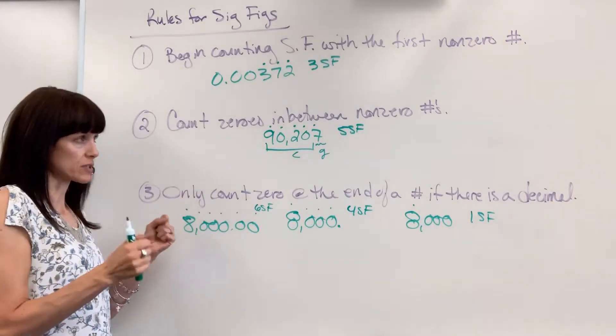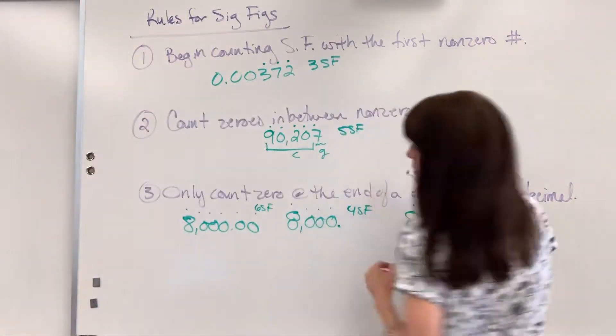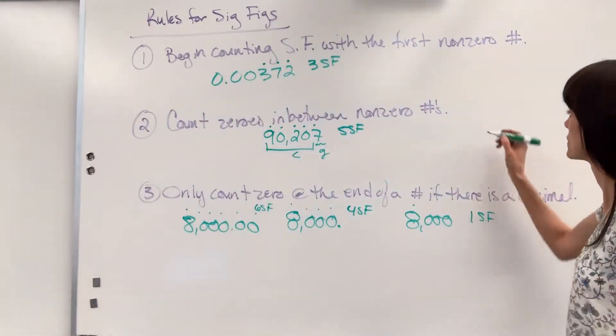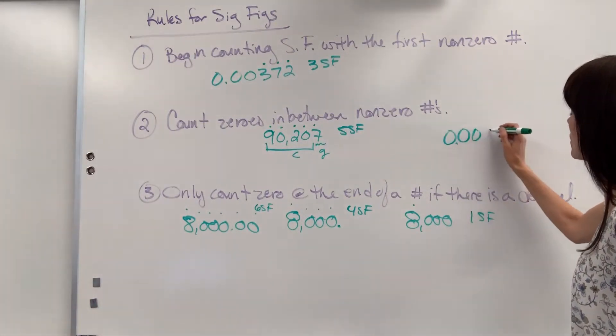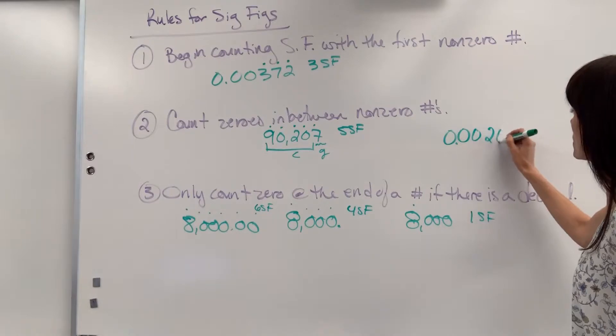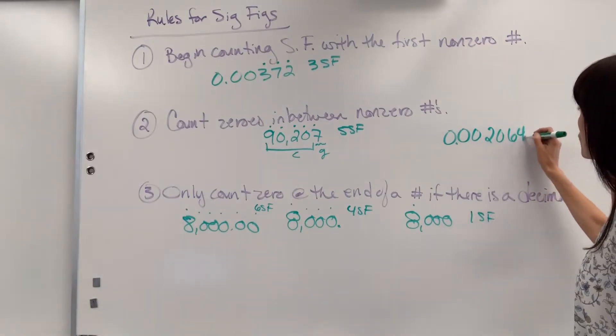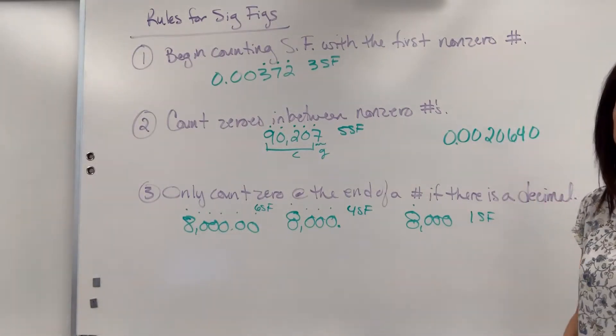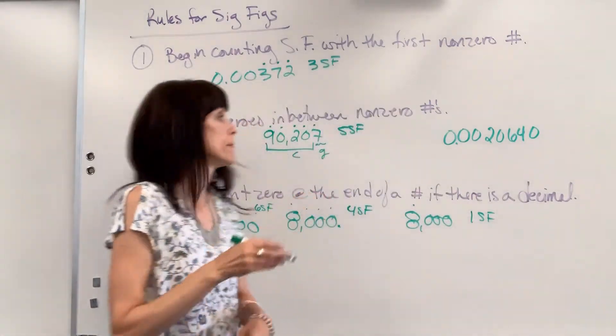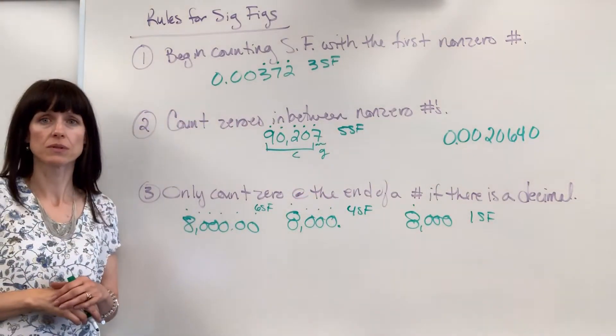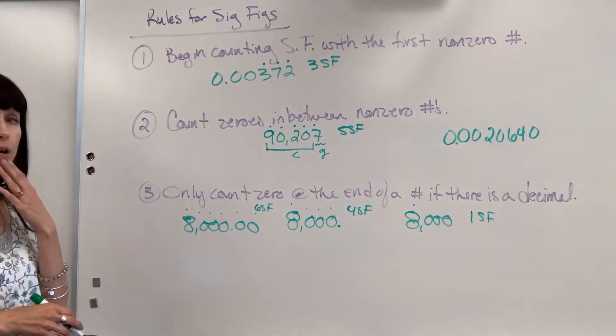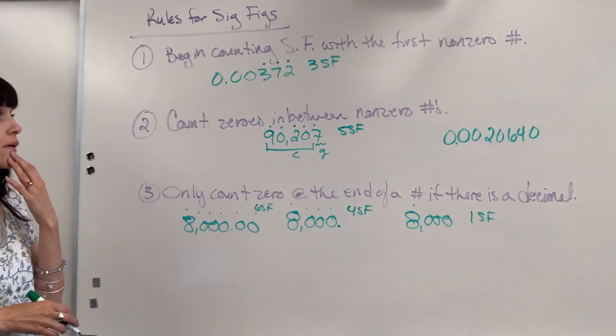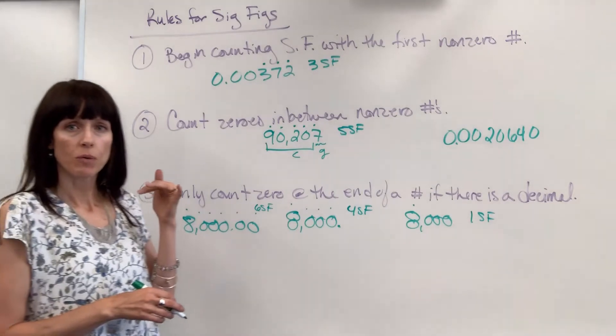Now putting this all together, here's a challenge problem for you. Look at this and I want you to count sig figs, 0.0020640. So look at that for just a second. It incorporates all three rules. How many sig figs? How many sig figs does that have?